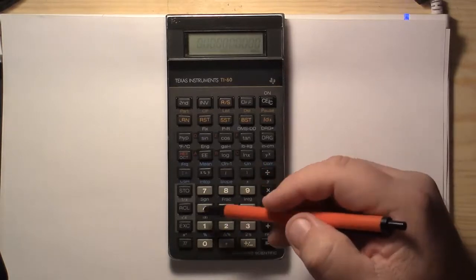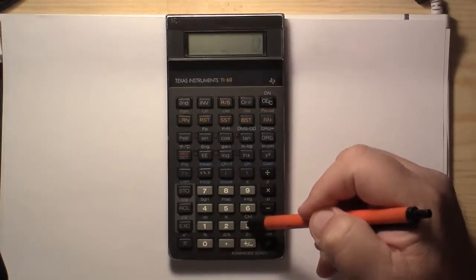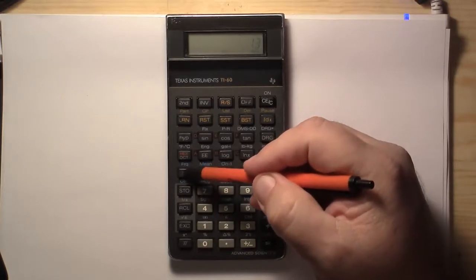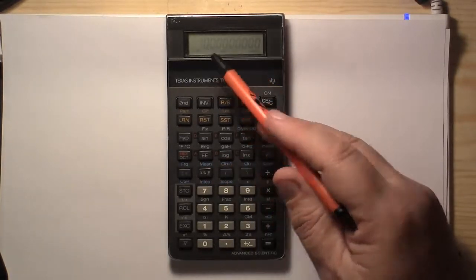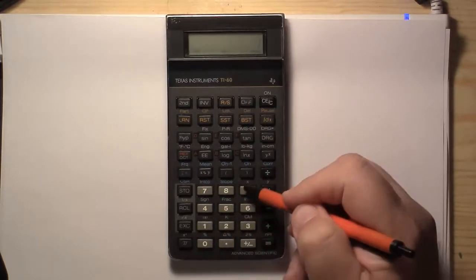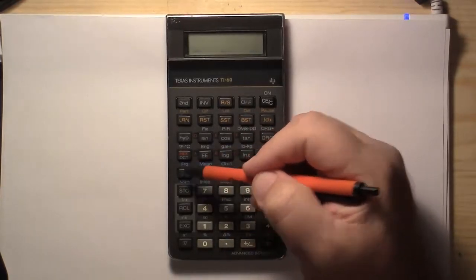Now we'll type in each one of our numbers. So I'll do 13, and then I'll push my sigma plus. It comes up and tells us 1, means we've got one number in there. Now I'll push 19, and then the sigma plus.